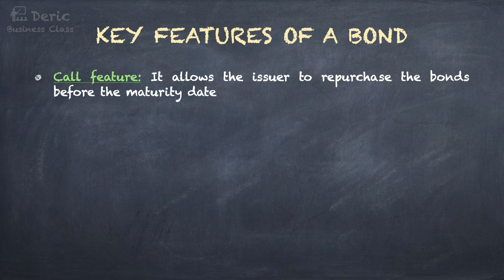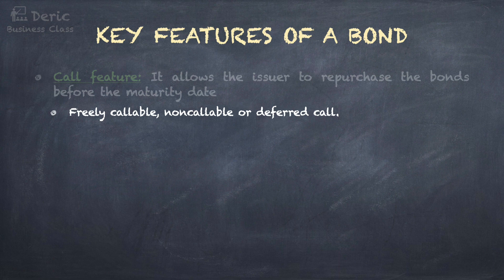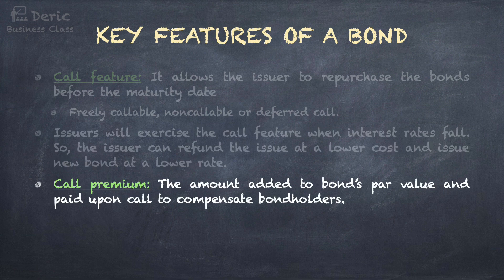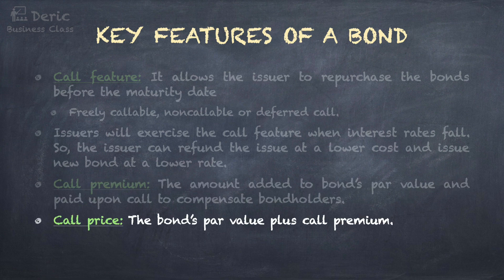The call feature allows the issuer to repurchase the bonds before the maturity date. It can be freely callable, meaning the company can buy back the bond at any time. Non-callable means the company cannot retire the bond until the maturity date. A deferred call is a provision that prohibits the company from calling the bond before a certain date — during this period the bond is said to be call protected. Issuers will exercise the call feature when interest rates fall, so the issuer can refund the issue at a lower cost and issue new bonds at a lower rate. The call premium is the amount added to the bond's par value and paid upon call to compensate bondholders. The call price is the bond's par value plus the call premium.